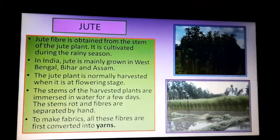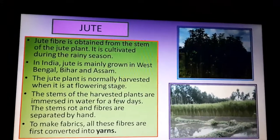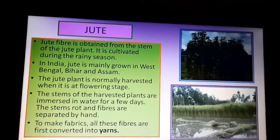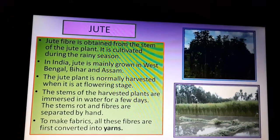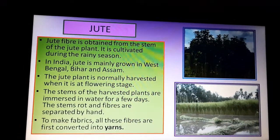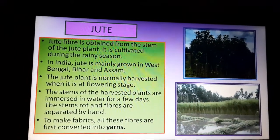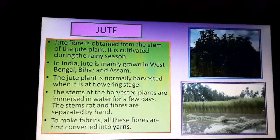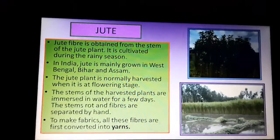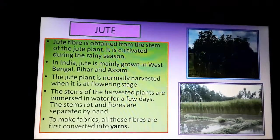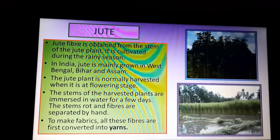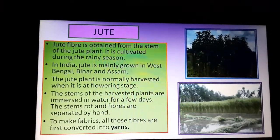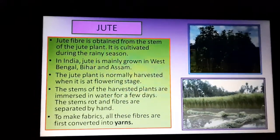Always remember: after harvesting, the jute plants are immersed in water for a few days, the stems rot, and the fibers are separated by hand. After that, those fibers are converted into yarns of jute.